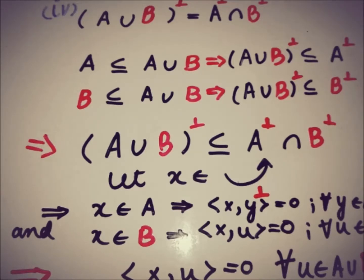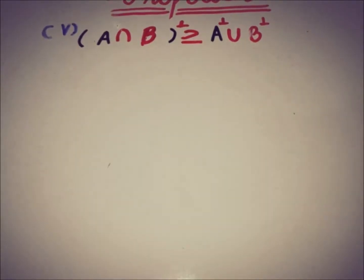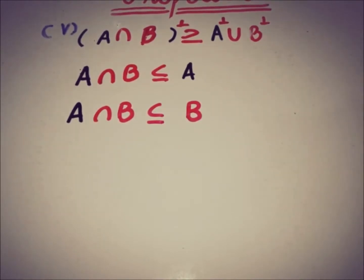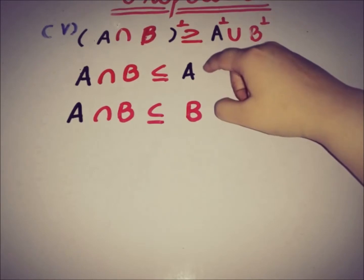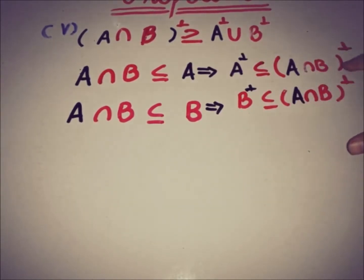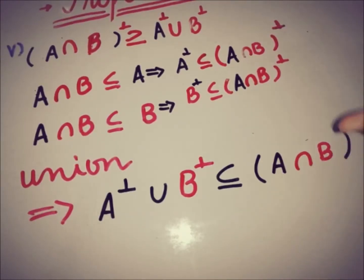The next property is that (A ∩ B) annihilator is a superset of A annihilator ∪ B annihilator. We use the fact that A ∩ B ⊆ A and A ∩ B ⊆ B. Applying the second property and taking annihilators, the subset relation flips: A annihilator ⊆ (A ∩ B) annihilator and B annihilator ⊆ (A ∩ B) annihilator. Taking the union of both gives A annihilator ∪ B annihilator ⊆ (A ∩ B) annihilator, which is the target.